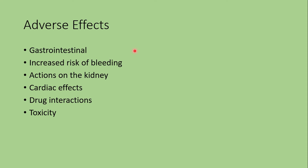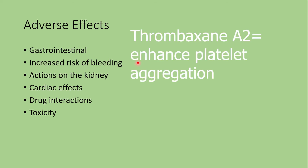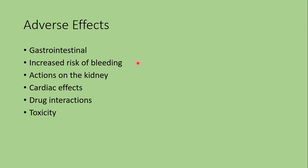The second adverse effect is increased risk of bleeding. Thromboxane A2 enhances platelet aggregation, but aspirin irreversibly inhibits COX-1 mediated thromboxane A2 formation, while other NSAIDs reversibly inhibit its production. Aspirin's effect continues for the lifetime of the platelet since platelets have no nucleus and cannot produce more thromboxane, while COX-2 selective NSAIDs have less antiplatelet aggregation effect since that is related to COX-1.